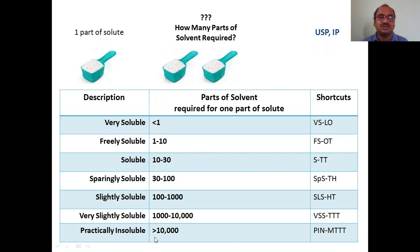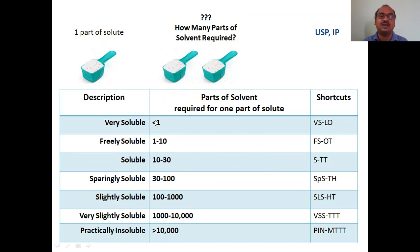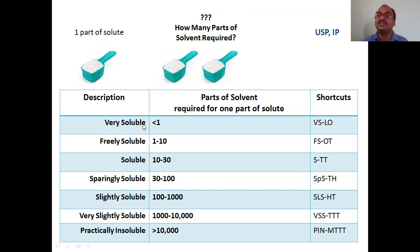Observe the pattern: the first entry is less than 1, and the last is greater than 10,000 — both give just one number. All the entries in between give two numbers. More than 10,000 applies to practically insoluble. You have to practice this table; it is very important for competitive examinations — they ask you to identify how much solvent is required for a given solubility description.